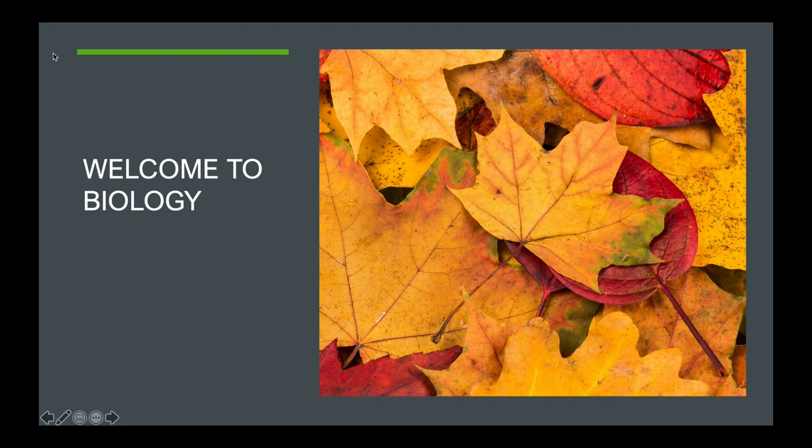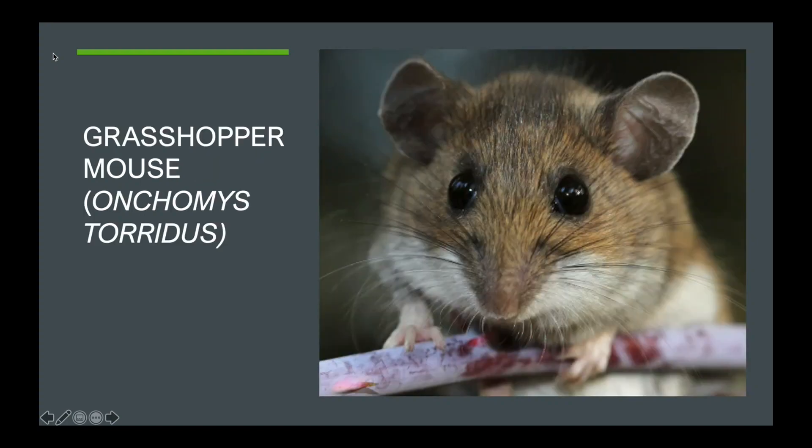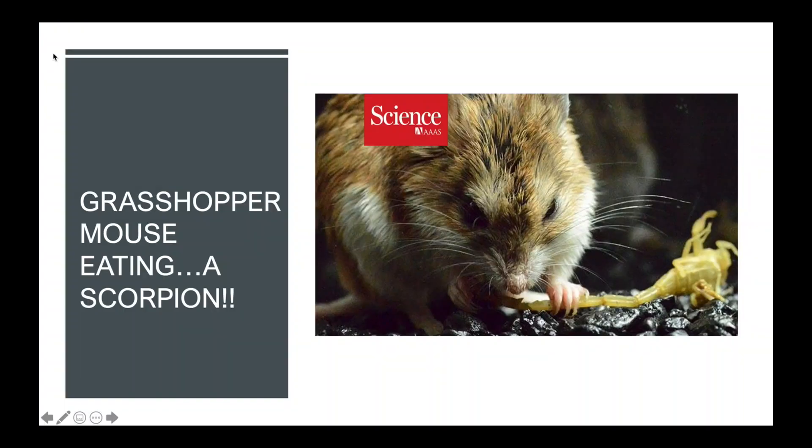To do that I'm going to use an example, which is the example of the grasshopper mouse. So this is the grasshopper mouse. Its scientific name is Onychomys torridus and it looks like a pretty typical mouse. It's got the big beady eyes and the pointy nose and the brown fur and the white fur and the big ears. But what makes this mouse very different from other types of mice is that this particular species of mouse, the grasshopper mouse, is able to kill and consume scorpions as part of its diet.